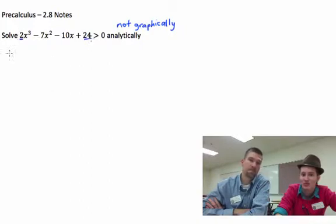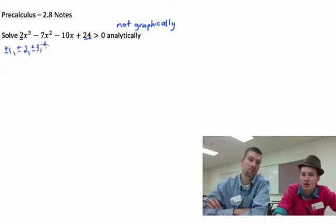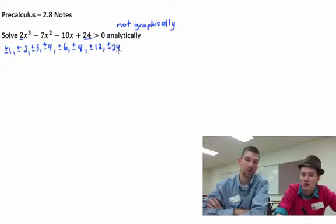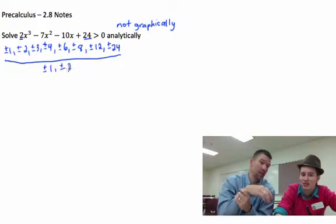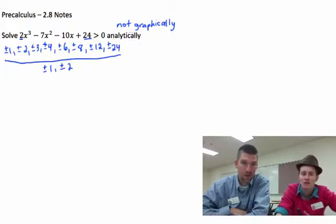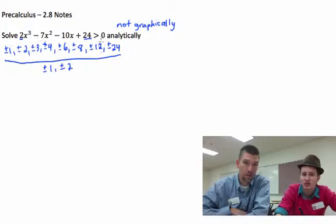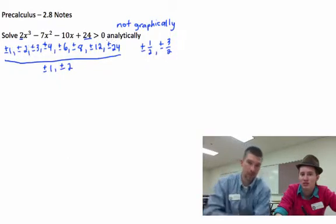Remember we use these two numbers. We're saying the factors of 24, which there are several: 1, 2, 3, 6, 8, 12, and finally 24. Over plus or minus 1, plus or minus 2. Now fortunately, you'll have all of these numbers on top over 1, and all of these numbers on top over 2. So you're really just going to have these top numbers and a few fractions: plus or minus 1 half, plus or minus 3 halves. And that's it - everything else cancels into things already on the top.